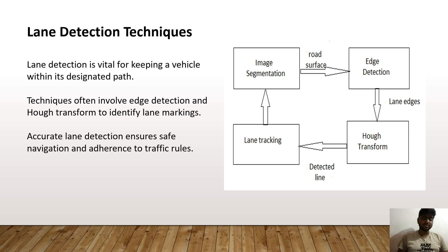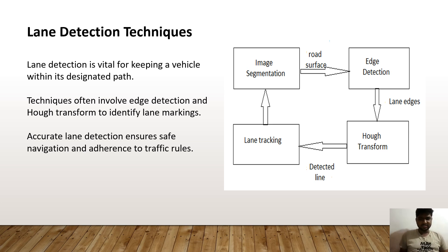Lane detection techniques play a vital role in keeping a vehicle within its desired path. This technique often involves edge detection and Hough transforms to identify lane markings. Accurate lane detection ensures safe navigation and adherence to traffic rules. The pipeline goes from image segmentation on the road surface, to edge detection, to lane detection edges, to Hough transforms, to detected lines and then to lane sections.